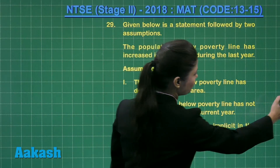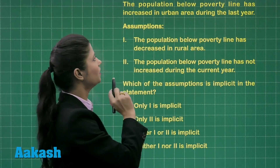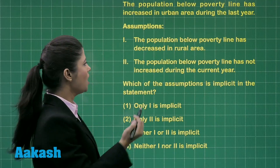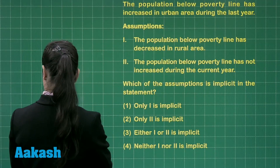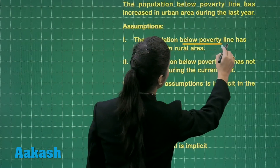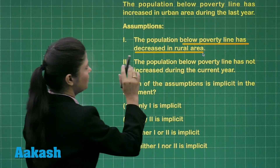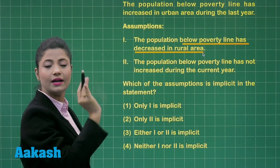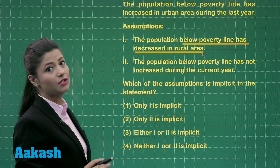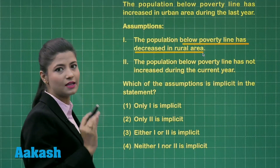Looking at the given statement, we are talking about the population in the urban area. But the first assumption tells you about the poverty line having decreased in the rural area. We are not talking about the rural area in the given statement, so you cannot conclude anything related to the rural area.